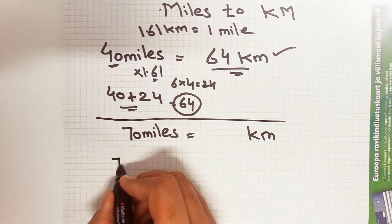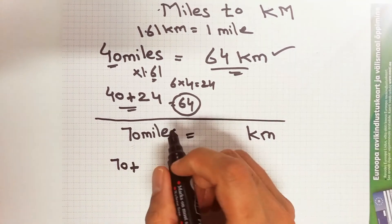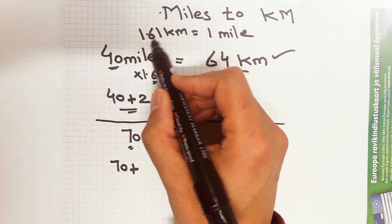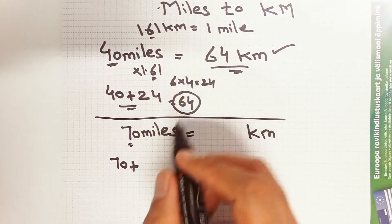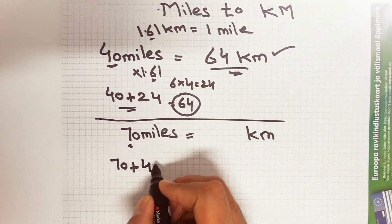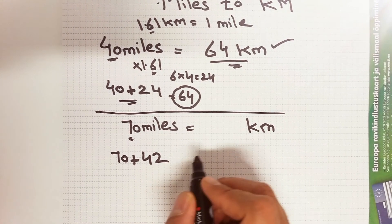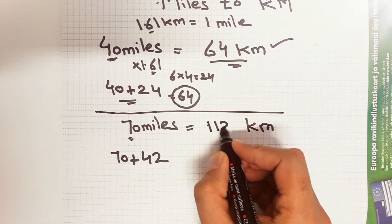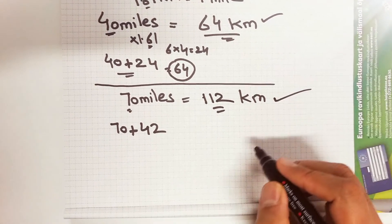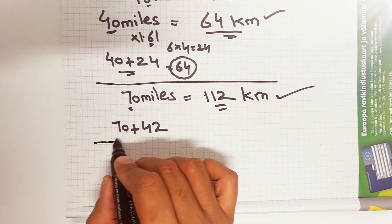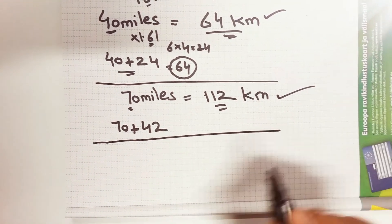Plus, now this 7 we multiply with this 6. So 7 multiplied by 6 equals to 42. So 70 plus 42, the answer is 112 kilometers. So the answer is 99% correct. This is the way you can find miles into kilometers.